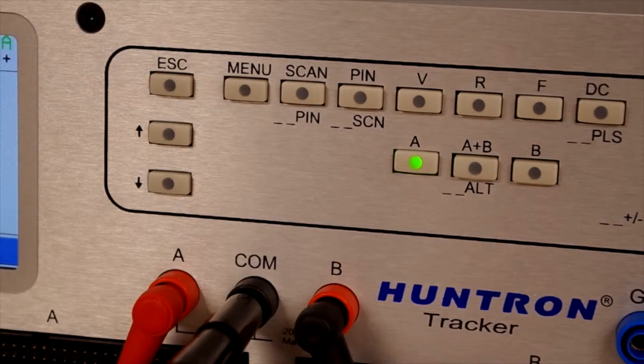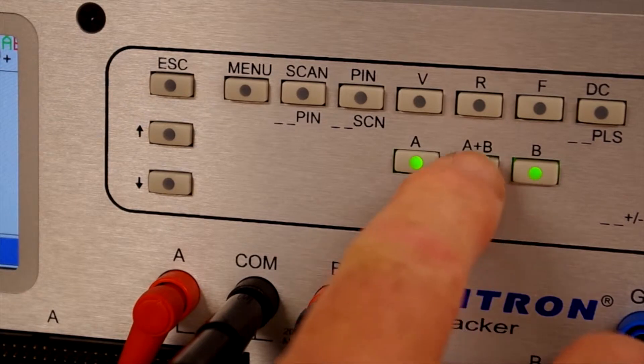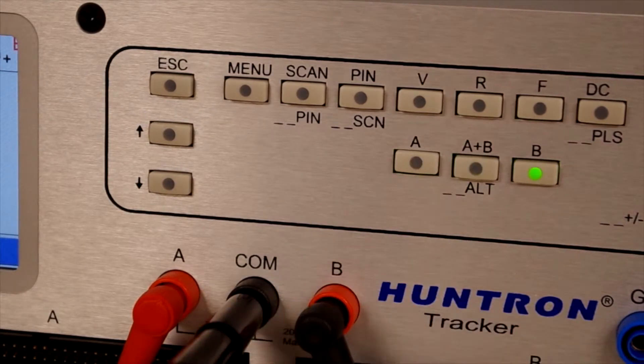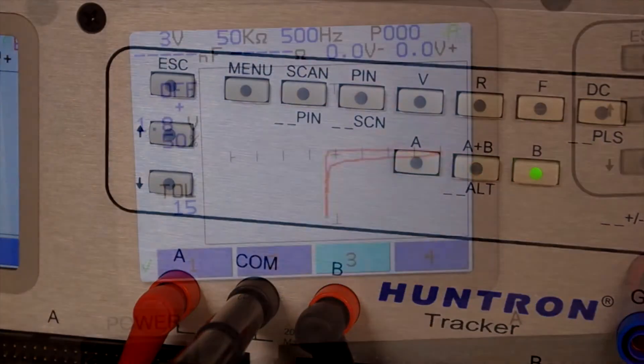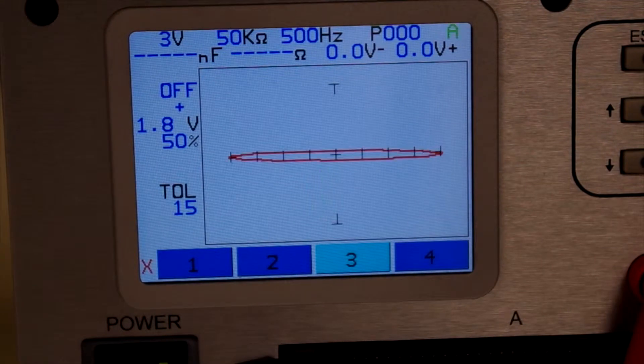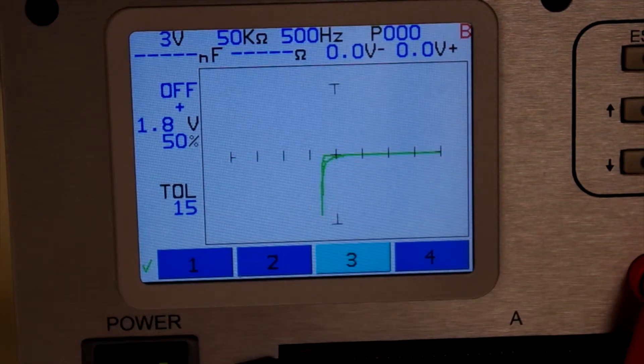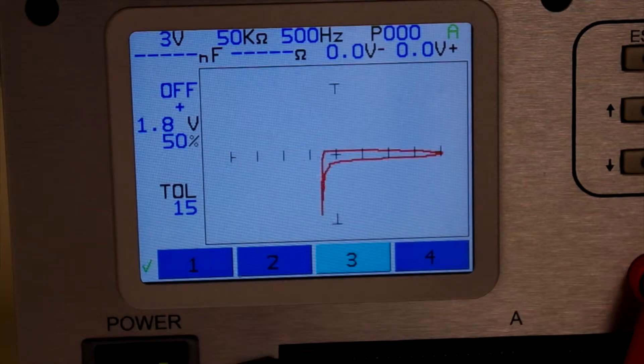Setting the tracker to alternate between A and B allows the signatures from two boards to be displayed on the tracker touch screen LCD. Channel A is shown in green and channel B in red. Detecting signature differences is simply a matter of comparing the two signatures.